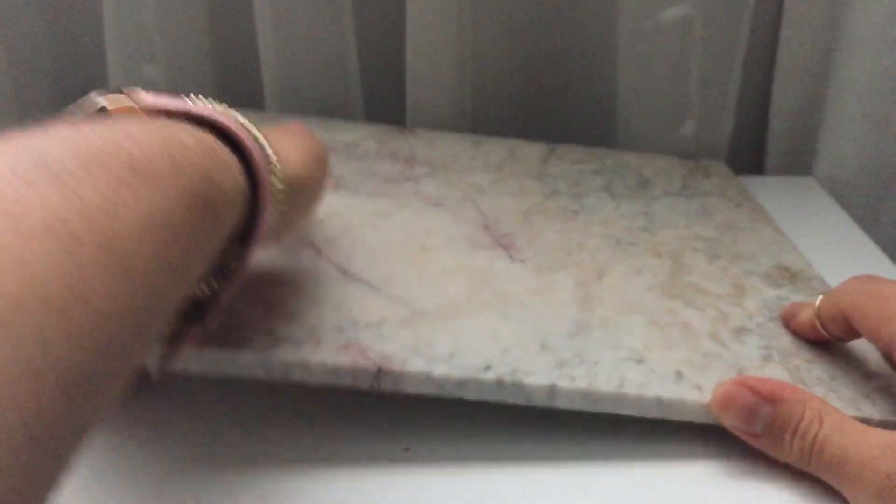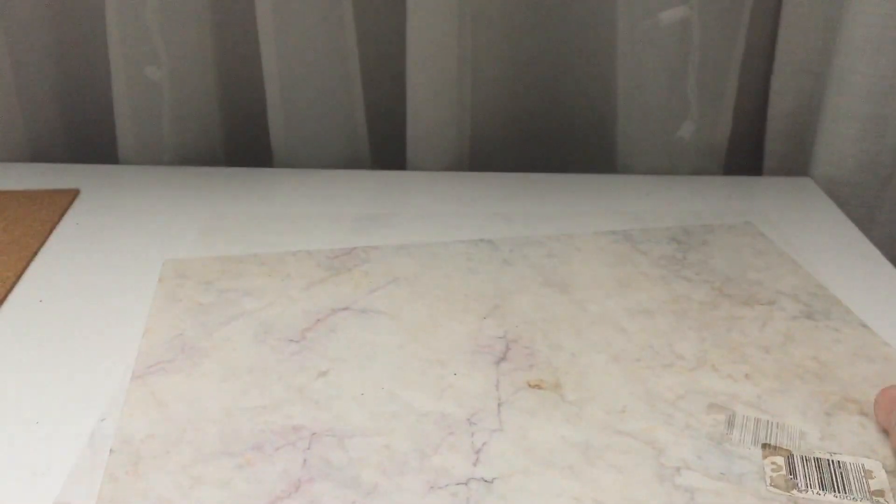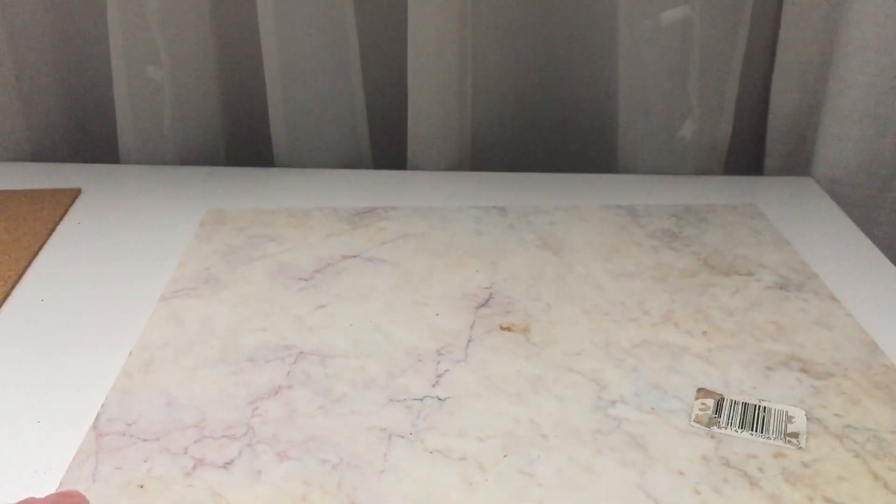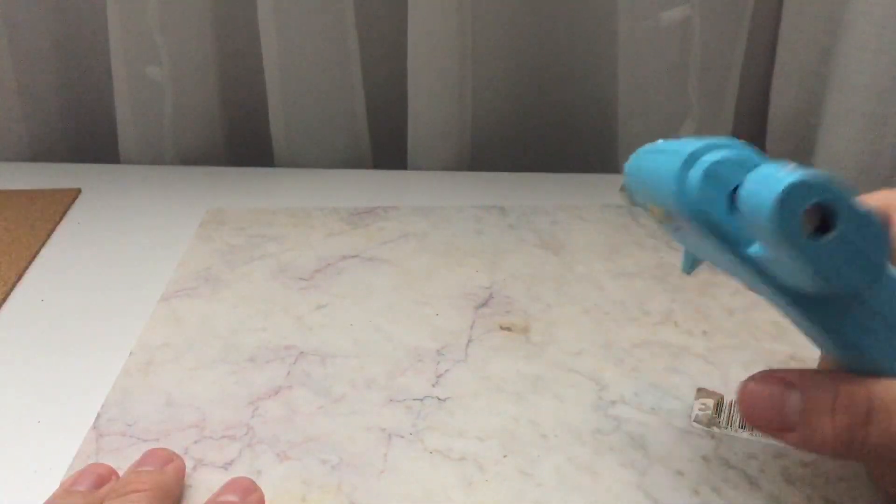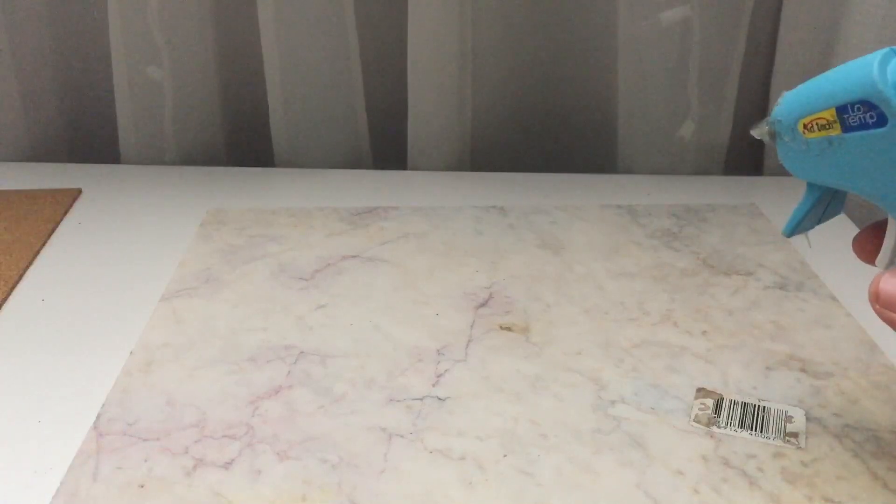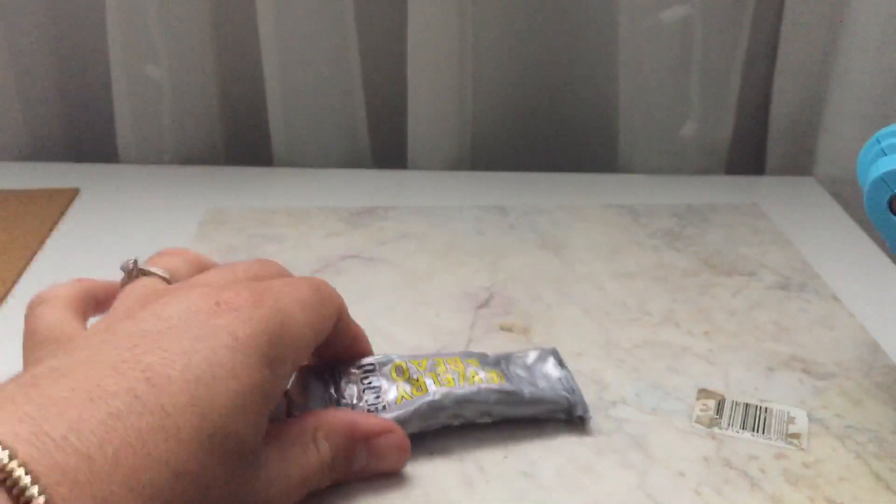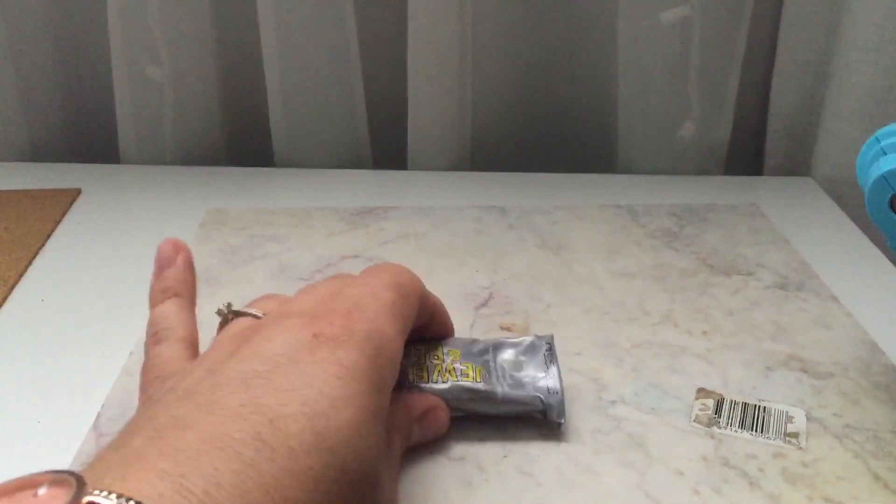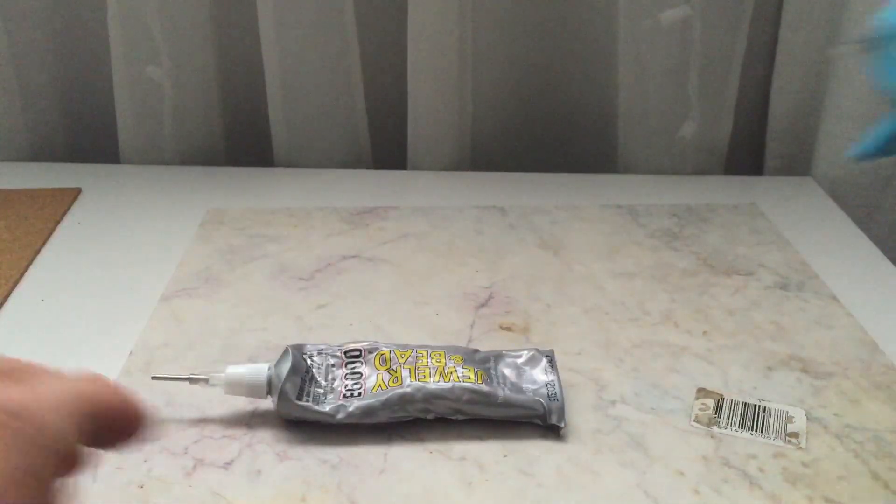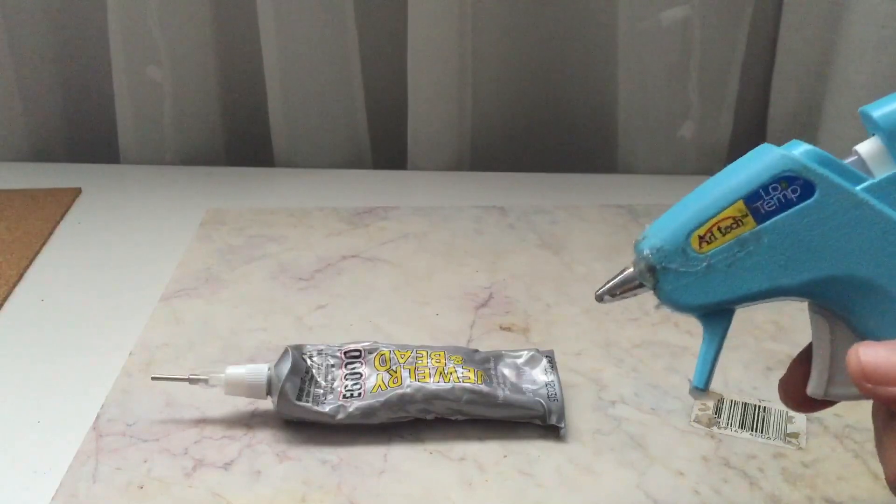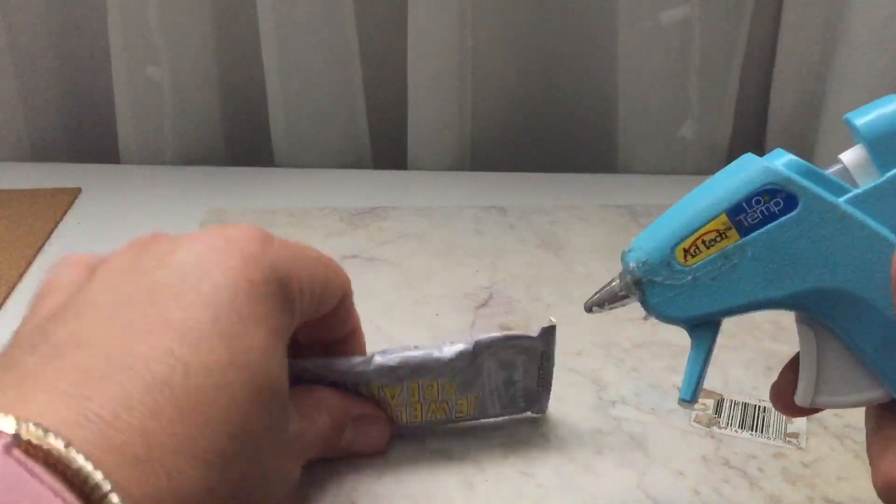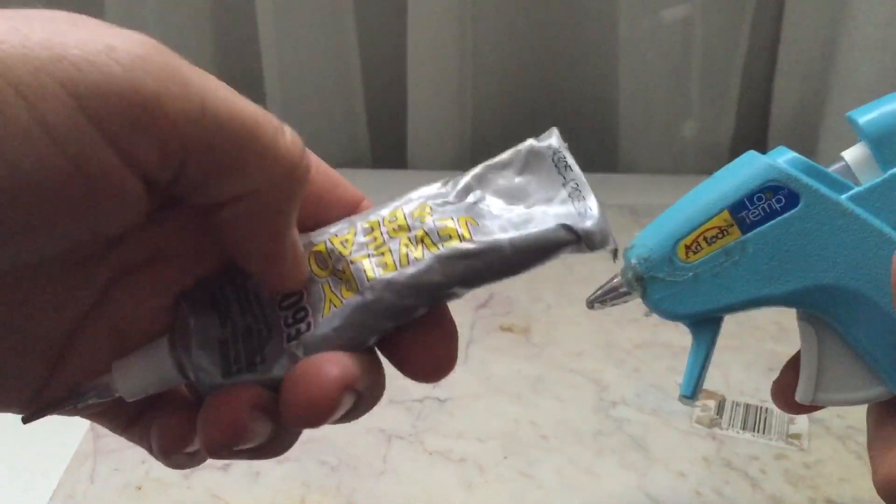So first thing we have to do is flip this tray over, or tile I should say. Now for video purposes, I'm going to be using my glue gun to glue these pieces. In real life, I suggest you use your E6000 glue or any strong adhesive, and the reason why is because glue gun will stick to it but it doesn't give it a strong bond as this one.